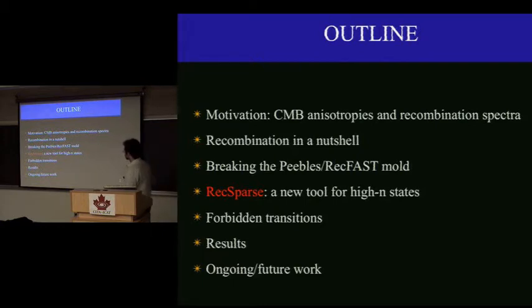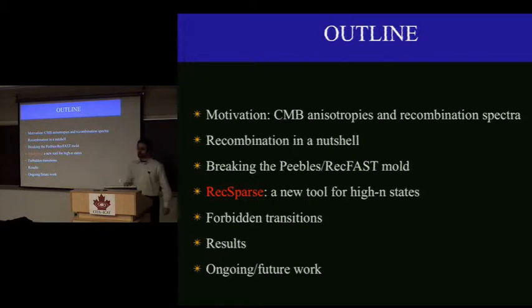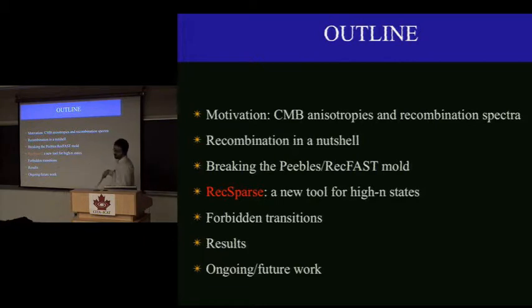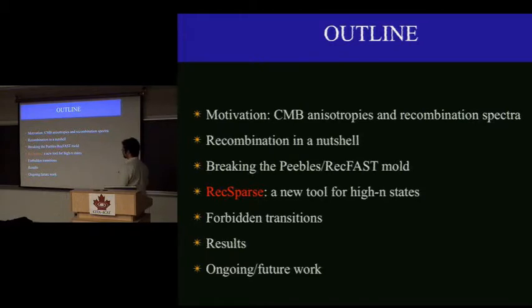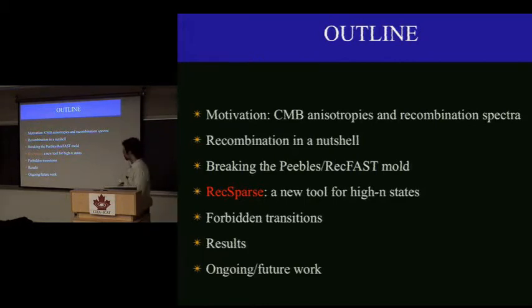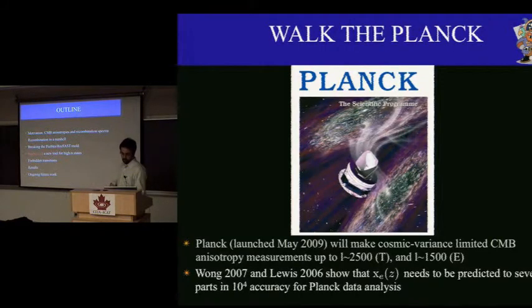I'm going to start by going through the physics of recombination in a nutshell, and tell you what goes wrong with both the simple Peebles picture from the 60s and the multi-level atom calculation used for WMAP data analysis. I'll tell you about a new tool we've developed to solve this problem, including these very high-end states, and then about the relevant forbidden transitions. Then I'll show some results and tell you about what I'm still working on.